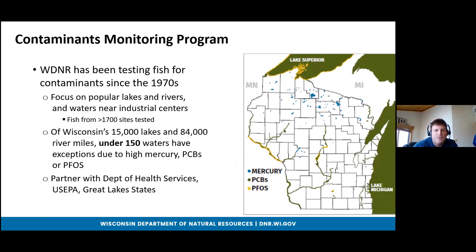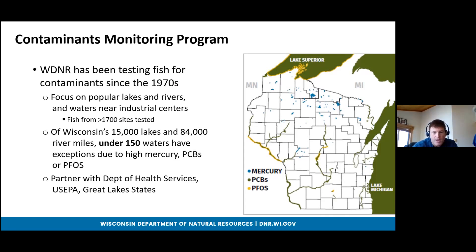Wisconsin DNR has been testing fish for contaminants going back to the early 1970s. The primary focus is on popular lakes and rivers, especially those around industrial centers. We've tested fish from over 1,700 sites so far, and only about 150 specific locations have site-specific consumption advisories due to high mercury, PCBs, or PFAS. We partner with the Department of Health Services and work with the US EPA and other Great Lakes states through the Great Lakes Consortium for Fish Advisories.